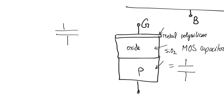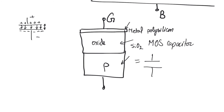In a metal-insulator-metal capacitor, when we apply a potential between the two plates, all of the potential falls upon the insulator in the middle, because the metal plates cannot support any voltage drop. This leads to the accumulation of positive mobile charges on the top plate and negative mobile charges on the bottom plate, creating an electric field that stores energy. In a MOS capacitor, however, the bottom plate is not metal, so when we apply a positive voltage we do not necessarily see mobile negative charges on the bottom plate — we could instead see ionic charge forming due to a depletion region, which leads to a very different behavior from a traditional capacitor.